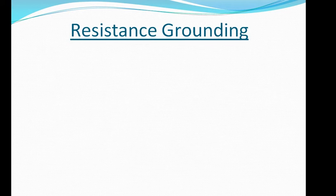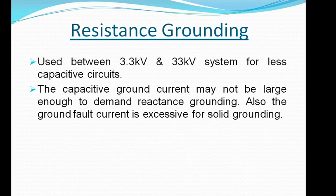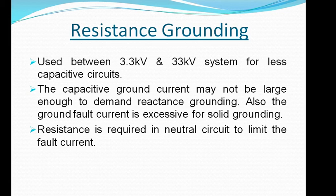Number two is resistance grounding. This type of grounding is used between 3.3 kV and 33 kV systems. For less capacitive circuits, the capacitive ground fault current may not be large enough to demand reactance grounding. Also, the ground fault current is excessive for solid grounding, so resistance is required in the neutral circuit to limit the fault current.